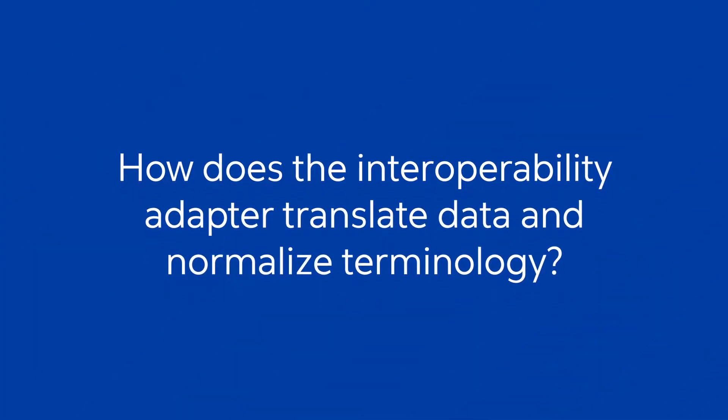How does the interoperability adapter translate data and normalize terminology? Within the adapter, the main purpose is to transform the data to the FHIR 4.0.1 standard and perform any necessary terminology normalizations. Terminology normalization addresses differences in value sets — for example, marital status values in a source system versus FHIR's own value sets. When requests come in, the adapter reaches back into Facets using open access services or through Qnext using the QXi services, retrieves that data, maps it to the appropriate FHIR data elements, and performs that terminology normalization.